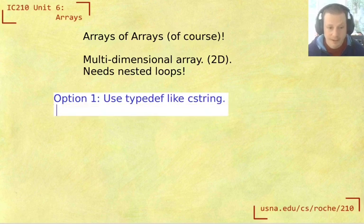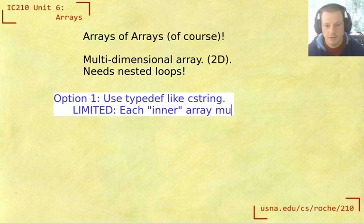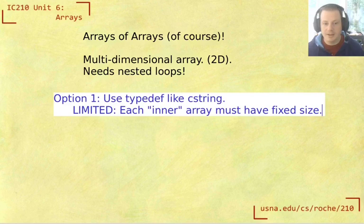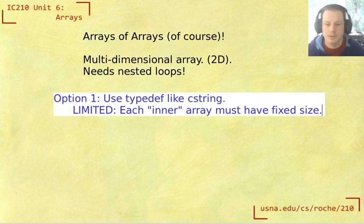But it's very limited in that each inner array must have fixed size, right? Because in order to allocate that all at once, we have to know the size of each piece of the outer array. And so in the case of C strings, we just said, okay, they're all 128 bytes. But that's not always going to make sense for what we want to do.